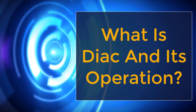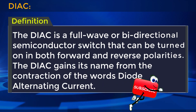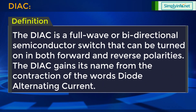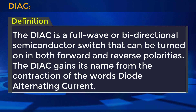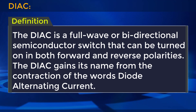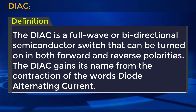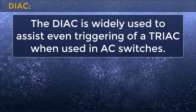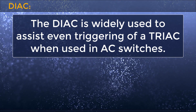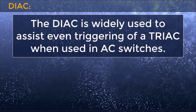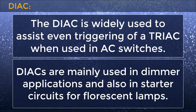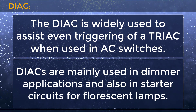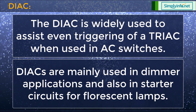What is DIAC and its operation? The DIAC is a full wave or bi-directional semiconductor switch that can be turned on in both forward and reverse polarities. The DIAC gains its name from the contraction of the words diode alternating current. It is widely used to assist even triggering of a TRIAC in AC switches, dimmer applications, and starter circuits for fluorescent lamps.